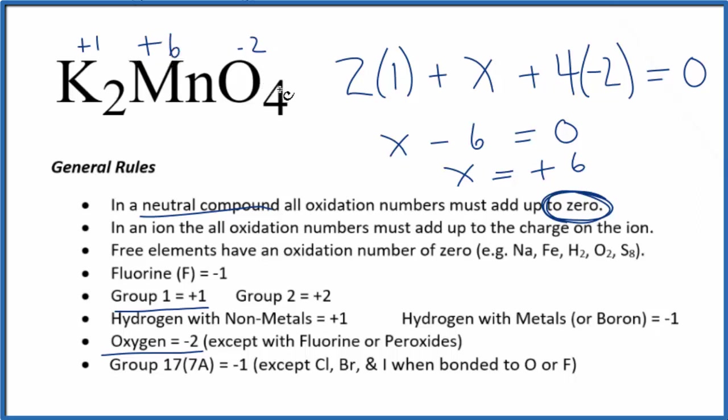If we add all these up, four times minus two, that's minus eight plus six minus two, and then two times positive ones plus two, minus two and plus two, it all adds up to zero.